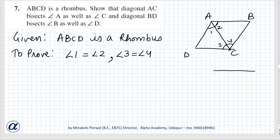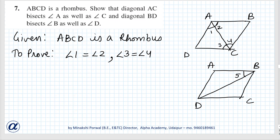For diagonal BD, we draw another rhombus ABCD and make only this diagonal. Suppose this is angle 5, this is 6, this is 7, and this is 8. We have to prove that angle 5 equals angle 6, and angle 7 equals angle 8.